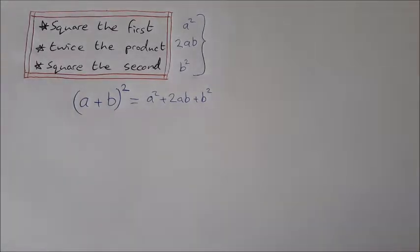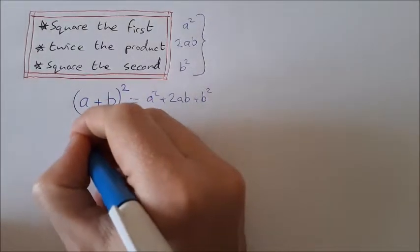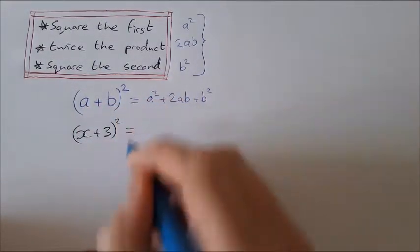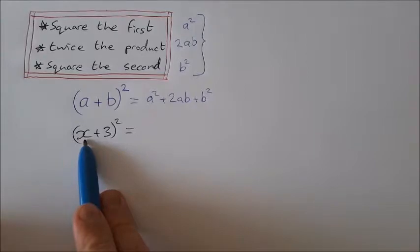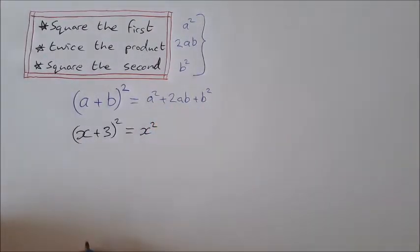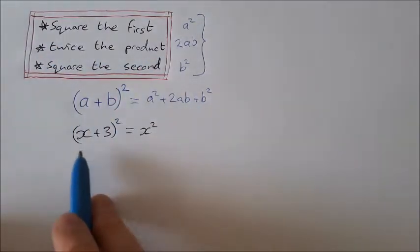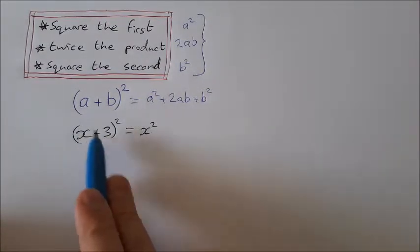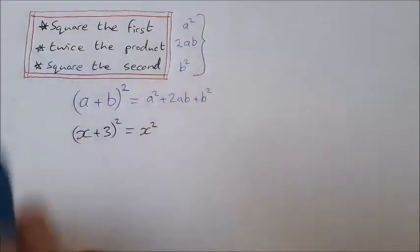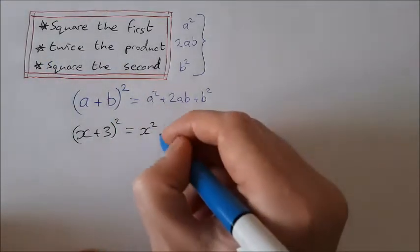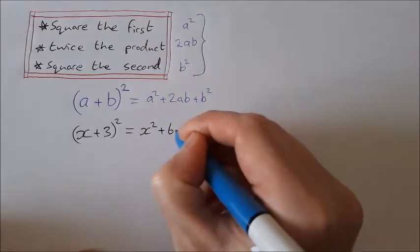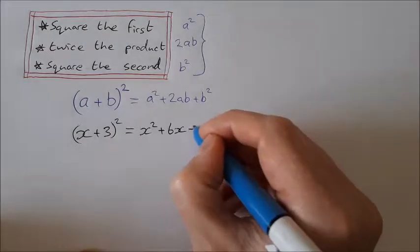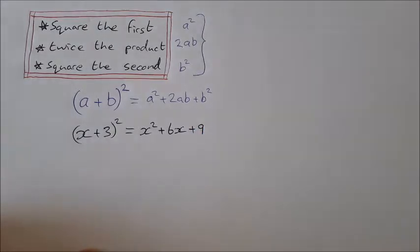Let's have a look at another one. Let's throw in a number: (x+3)². Square the first, x². Twice the product: x multiplied by 3 is 3x, twice that is 6x. Square the second, 3² is 9. So (x+3)² = x² + 6x + 9. Easy.